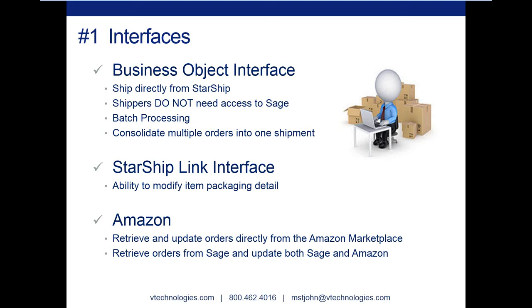A third interface that's new is our Amazon interface, which allows Starship to retrieve and update orders directly from the Amazon marketplace — ship or batch ship, process shipments, and push all shipping information back up to Amazon. We also have an Amazon interface extension you can use if you're currently getting your Amazon orders into Sage: order information flows from Amazon into Sage, Starship grabs that information to ship and process the order, and Starship passes the shipping information back to both Sage and Amazon.